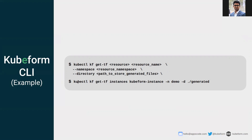This example command retrieves the main.tf and terraform.tfstate for a QFirm instance named 'qfirm-instance' in the 'demo' namespace, with a path provided indicating where the files should be stored.